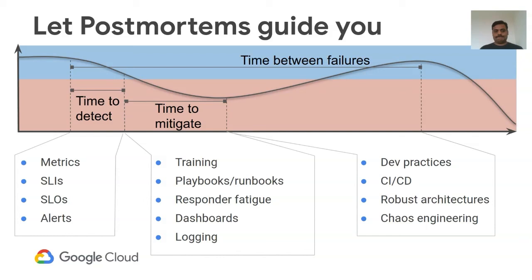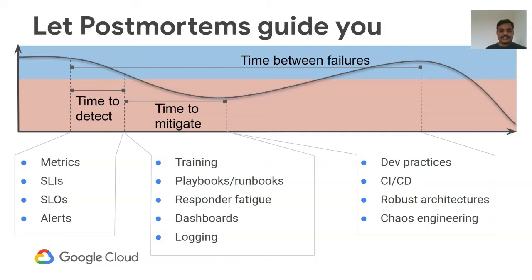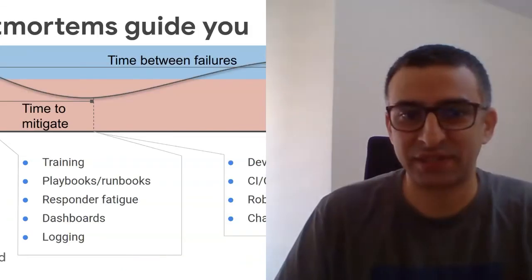This is the final slide. In summary: have SLAs and SLOs — that's how you define and measure the health of your system. Let postmortems guide you — after every incident, write a postmortem and it will give you insights about where your system fails, how to improve its resilience, how to shrink time to detection or time to mitigation, and how to prioritize action items. If you have enough postmortems, you know where to invest your engineering. Hopefully, you will shrink your production incidents. Thank you, sorry about running long. Do we have any questions?